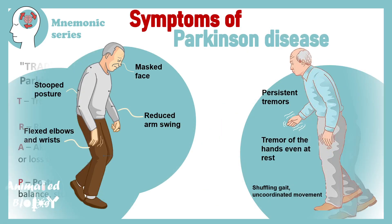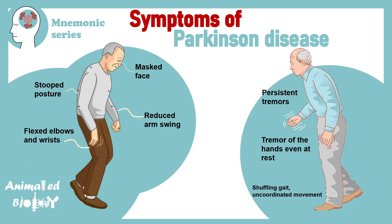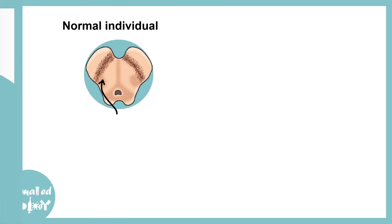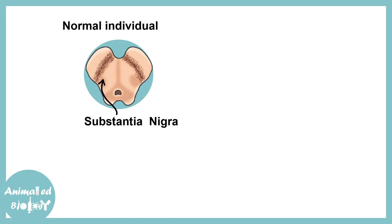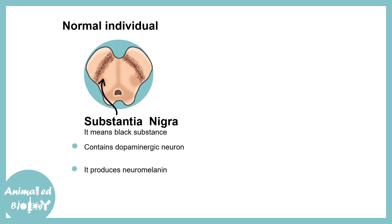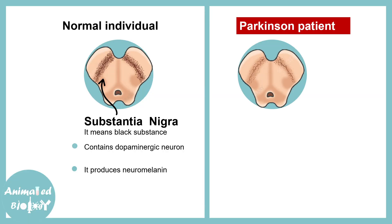Parkinson is a severe neurodegenerative disorder which is characterized by loss of dopaminergic neurons. Normal individuals have dopaminergic neurons in the substantia nigra. Substantia nigra means black substance — it contains dopaminergic neurons which produce neuromelanin, giving it this classical black appearance. In Parkinson disease, the black spots in the substantia nigra appear to be reduced.